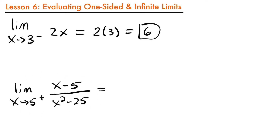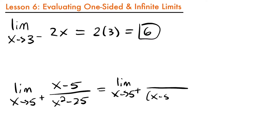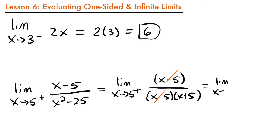Now look at this limit: the limit as x approaches 5 from the right side of (x minus 5) divided by (x squared minus 25). If we plug in 5, we'd have 0 in the denominator — undefined. However, if we factor the denominator, we get (x minus 5)(x plus 5). We can cancel out the (x minus 5) terms, so our limit becomes the limit as x approaches 5 from the right of 1 over (x plus 5).